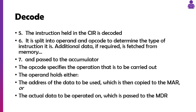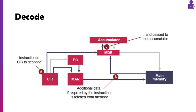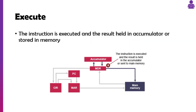The opcode specifies what we're actually going to do, and the operand will either hold the data we're going to use — for example, the number at address three plus the number four to make seven — or it might be the actual data itself. As you can see on screen, the instruction is decoded based on its opcode and operand. We get additional information if needed and pass it to the accumulator. Whatever that instruction is, it gets executed using the ALU, and once done, it gets put back into main memory or may just stay in a register.